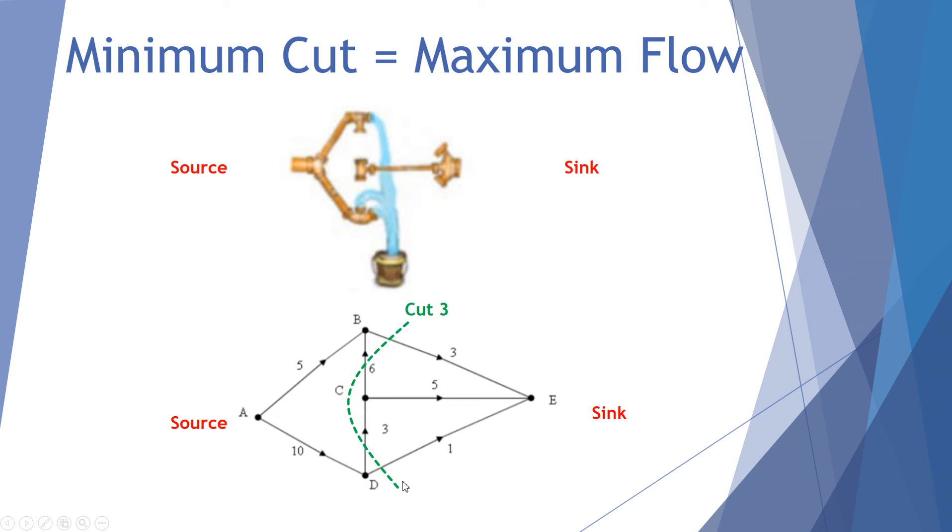A cut that completely cuts off the water flow is called a valid cut. So far we've looked at cut 1, cut 2, and cut 3, all of which are a valid cut. If I were, for example, just to cut here, this particular, across the 10, the 3, and the 1, that would be an invalid cut because water can still flow from A to B to E. A valid cut completely cuts off the source to the sink.